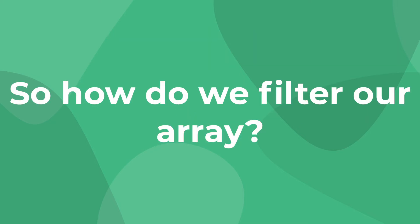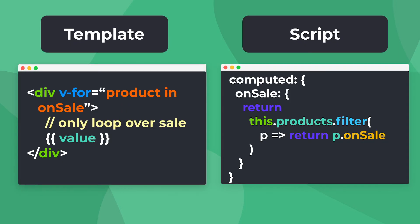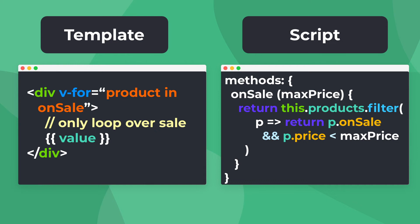The next two tips are alternatives to joining a v-for with a v-if. The fourth tip is to use a computed property or a method instead. A computed property would look like this, where we're actually doing our filtering in our script and iterating only over the products that match our conditional. Our template will only re-render when one of those on-sale products changes, as opposed to using v-if where it would re-render every time products change. We can also get the same functionality by using a method with a similar filter.